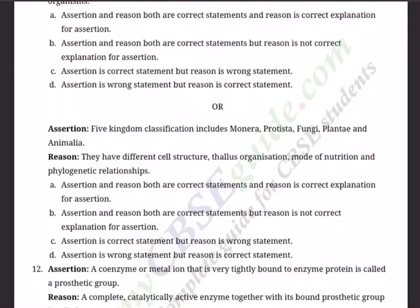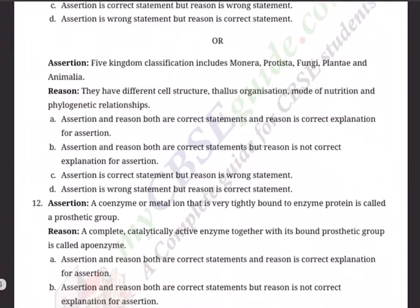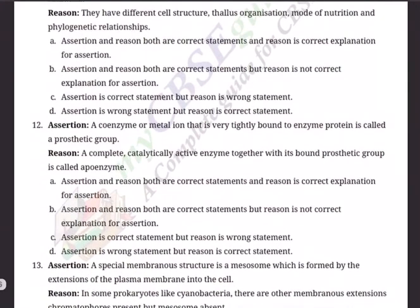The options for Q11 are: (A) Assertion and reason both are correct and reason is the correct explanation for assertion; (B) Assertion and reason both are correct but reason is not the correct explanation for assertion; (C) Assertion is correct but reason is wrong; (D) Assertion is wrong but reason is correct. Question 12: Assertion — A coenzyme or metal ion that is very tightly bound to enzyme protein is called a prosthetic group.